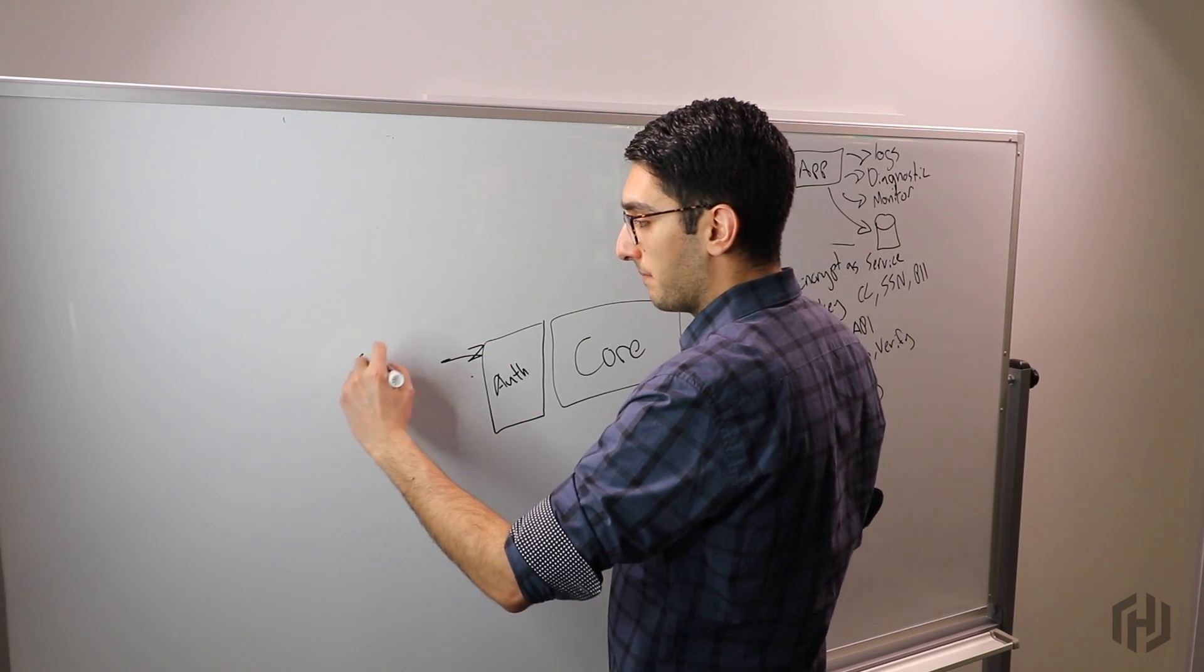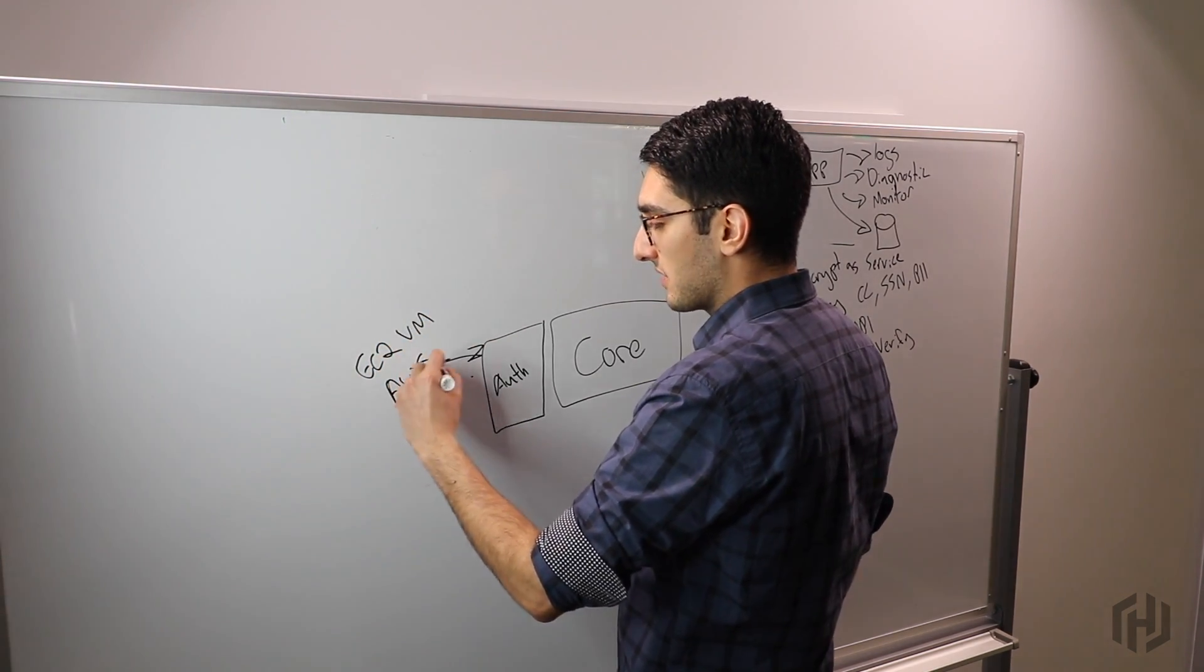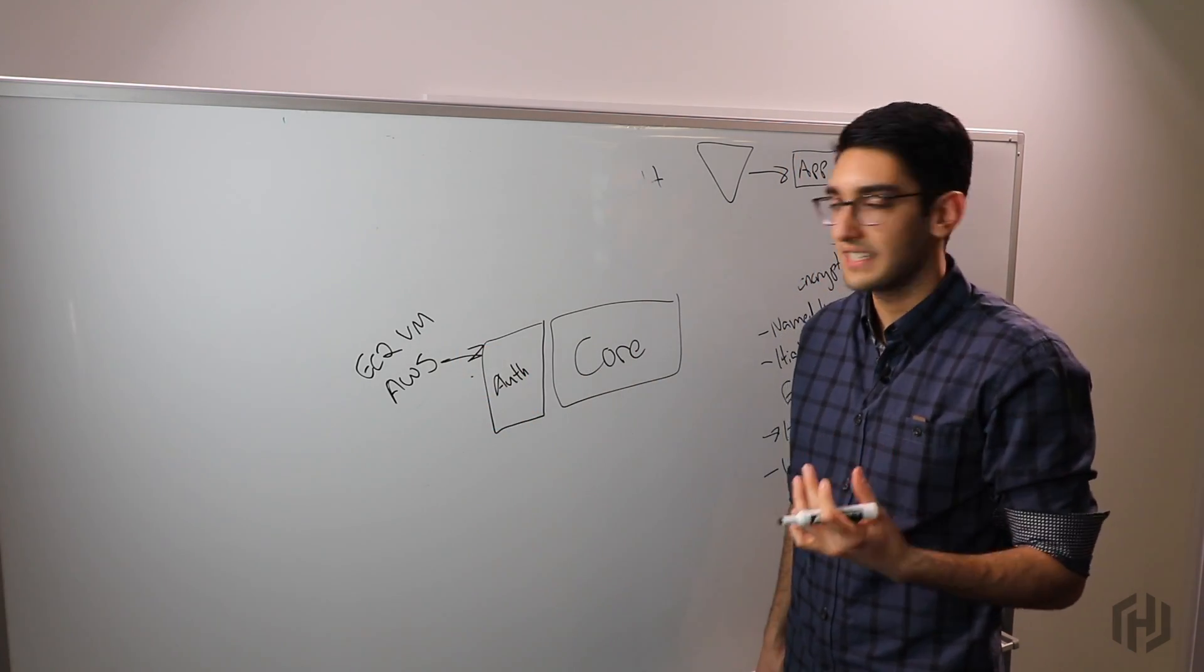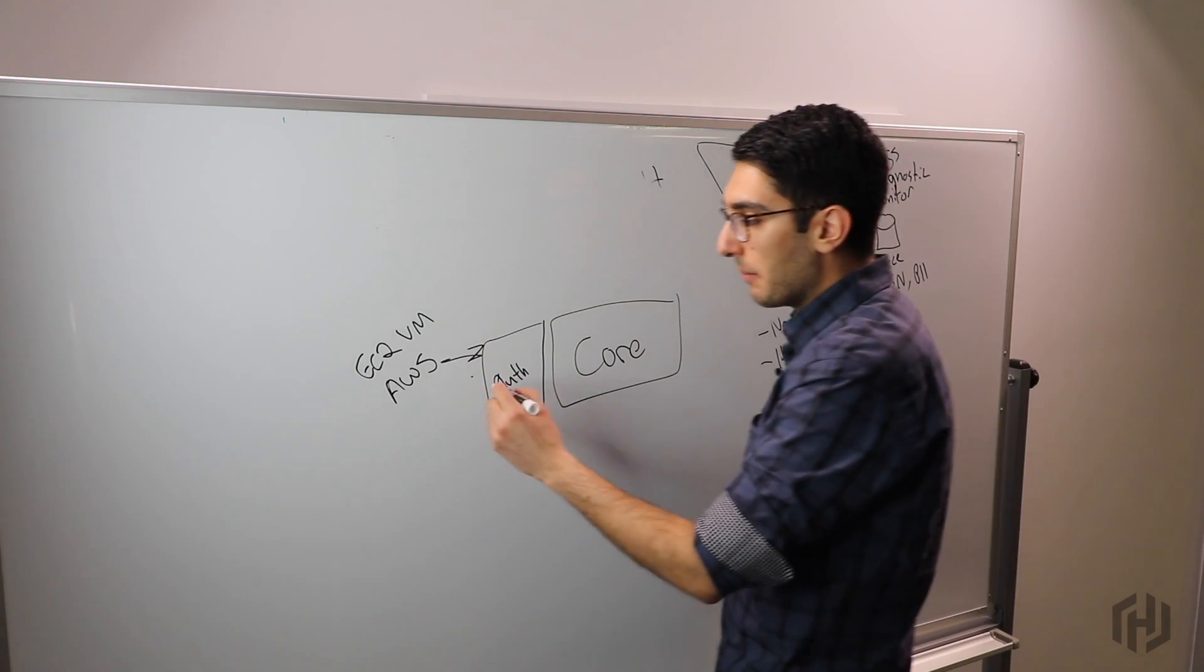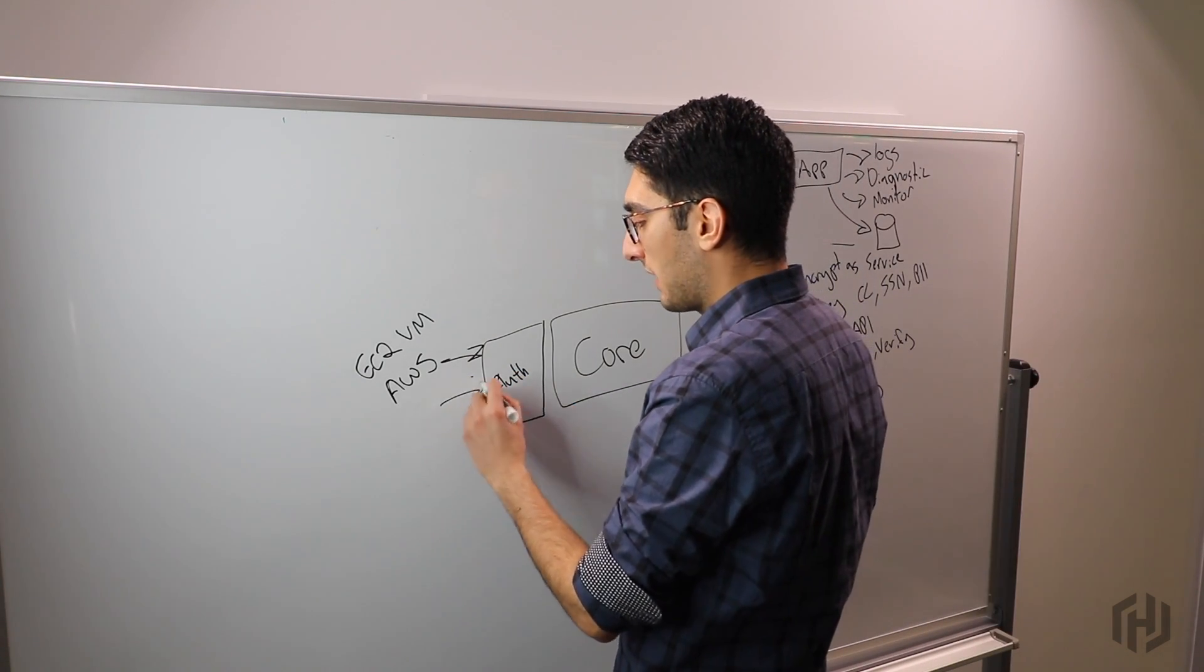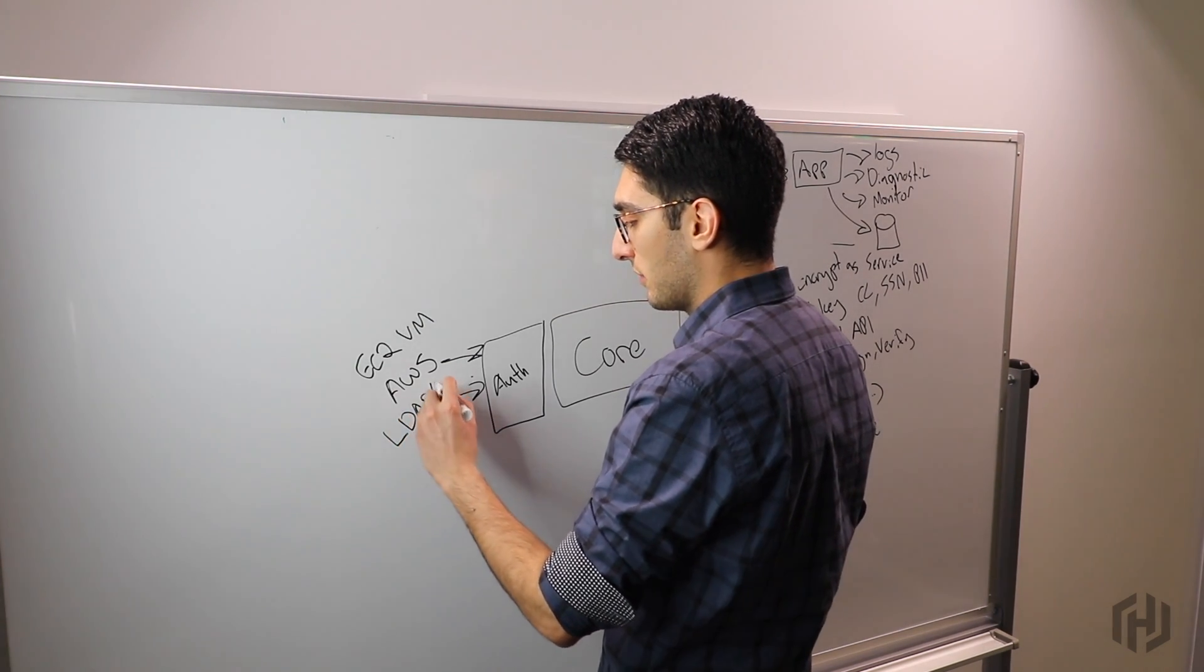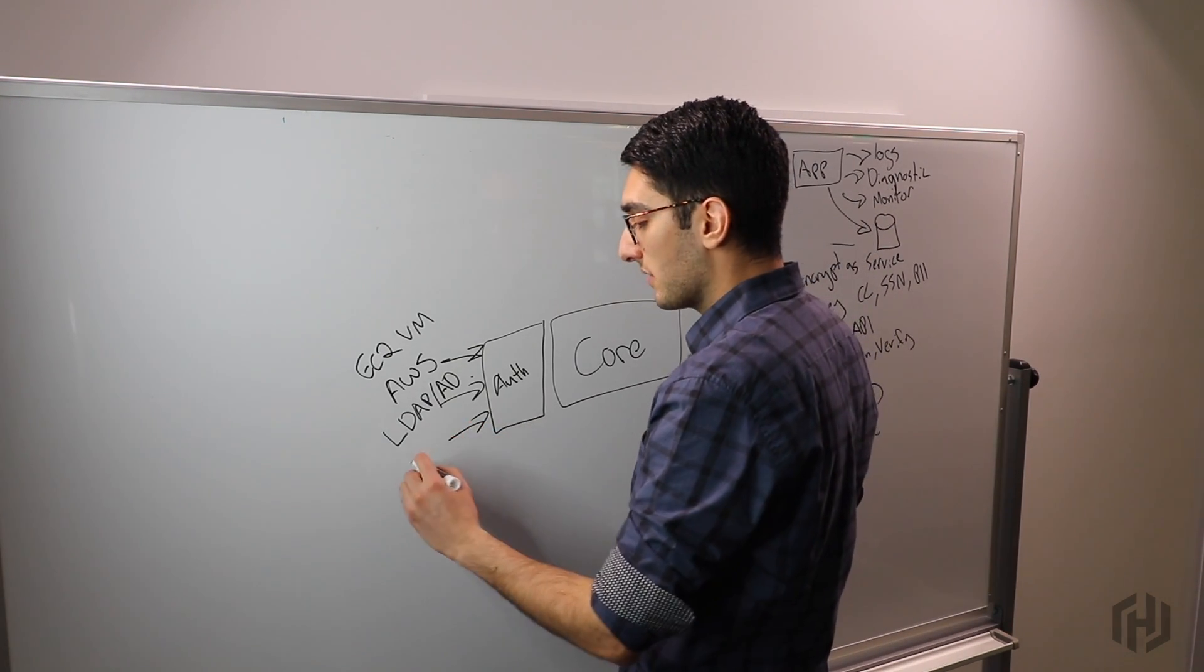These are what allow Vault to allow clients to authenticate from different systems. For example, if we're booting an EC2 VM, this EC2 VM might authenticate using our AWS authentication plugin. This plugin allows us to tie back into Amazon's notion of identity to prove that the caller is, for example, a web server.